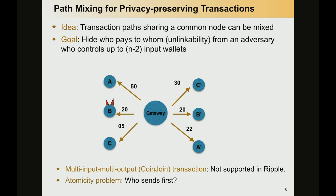If we use single-sender single-receiver transactions, then we have a problem, which we call the atomicity problem. In the example here, imagine that A performs a transaction that pays to C prime. Because C has already received her credit in C prime, C could just disconnect from the protocol and not pay to A prime. In this manner, A would have paid to somebody, but A prime would not have received credit — so the payment is not actually atomic.